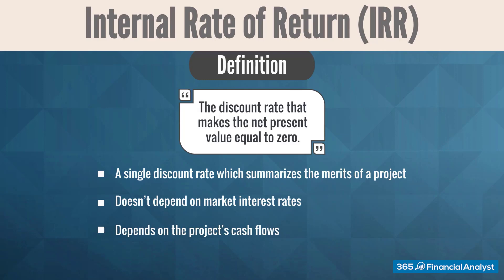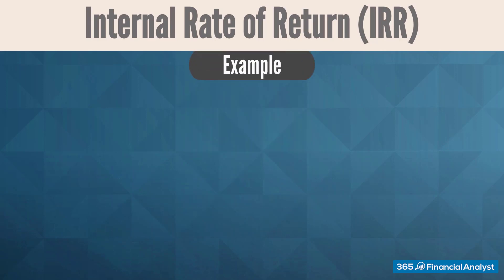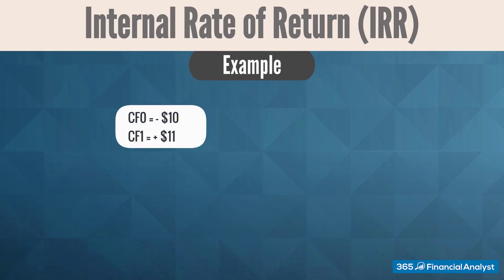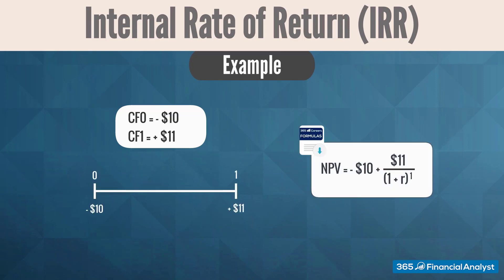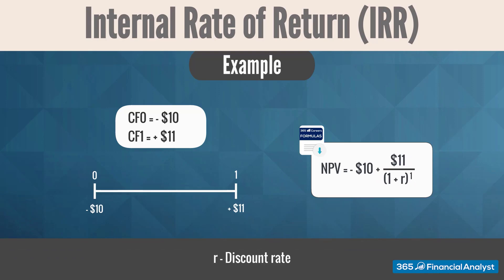Let's illustrate the idea with the following example. A project costs $10 to be realized today and pays $11 in one year. Here's a timeline for that. We know that the net present value of the project can be calculated as minus $10 plus $11 divided by 1 plus R to the power of 1, where R is the discount rate.